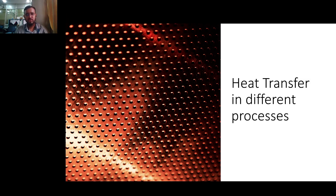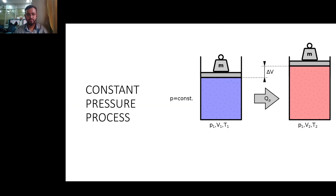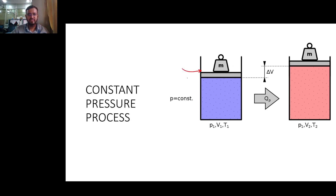Let us look at individual processes one by one and figure out what the heat transfer in each of these processes will be. First we'll be looking at the constant pressure process. As we know, the constant pressure process setup will look something like this — we have a frictionless piston-cylinder mechanism with a constant weight on it. There's a constant force acting on it, so it maintains constant pressure regardless of the position of the piston. We alter the thermal content or net internal energy in the system by heating or cooling.